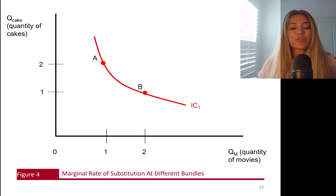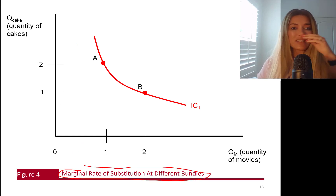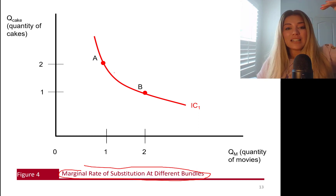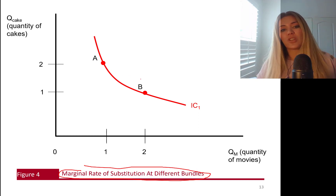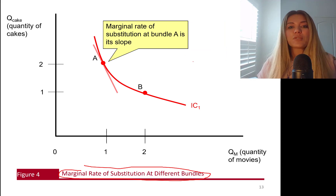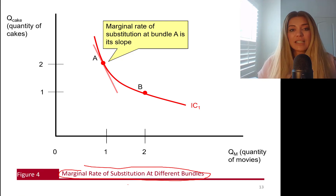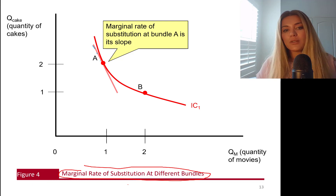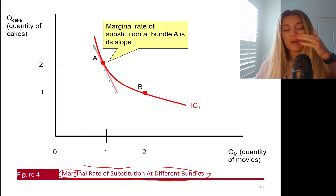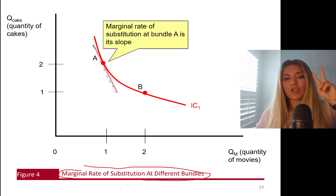The marginal rate of substitution is the slope of the indifference curve. Since this indifference curve is a curve and not a linear straight line, the slope is going to change. For instance, the marginal rate of substitution at bundle A is its slope — shown by a tangent line, what I call a ghost line. To find it, you look for a line that is tangent — meaning touching at only one point — and find the slope at exactly that point.